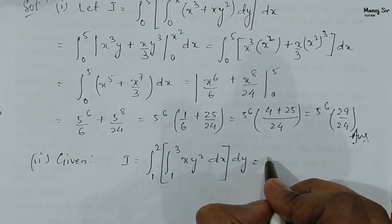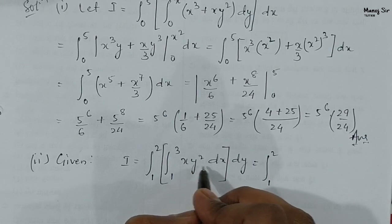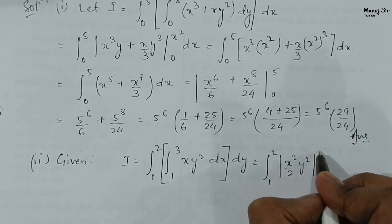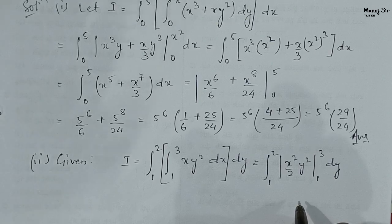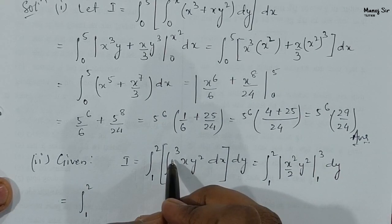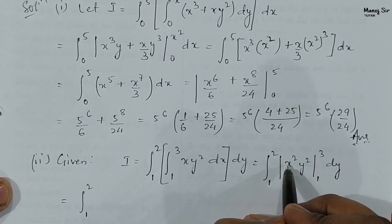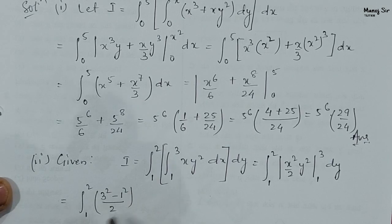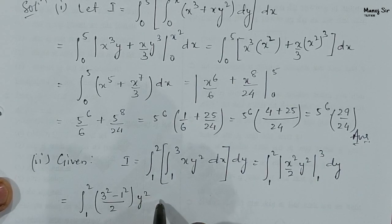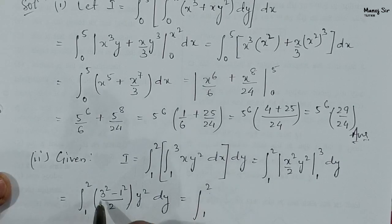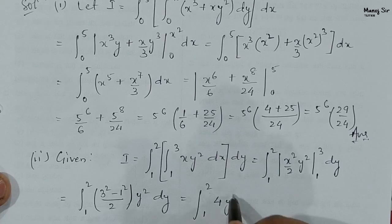So we can write: integration one to two, the inner integral gives x square upon 2 times y square, with limit from one to three, then dy. Solving this: integration one to two, putting the limits in place of x — three square minus one square upon two — times y square dy. This gives three squared is nine minus one is eight, eight upon two that is four, so we can write four into y square dy.